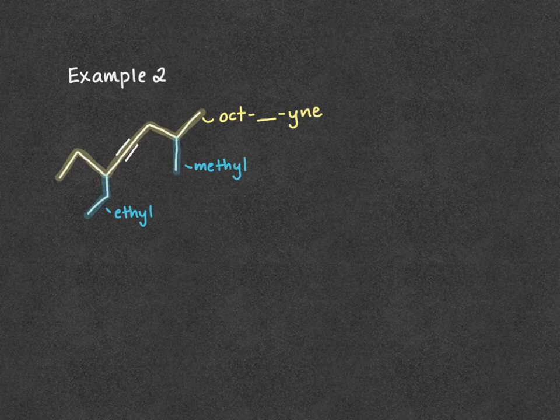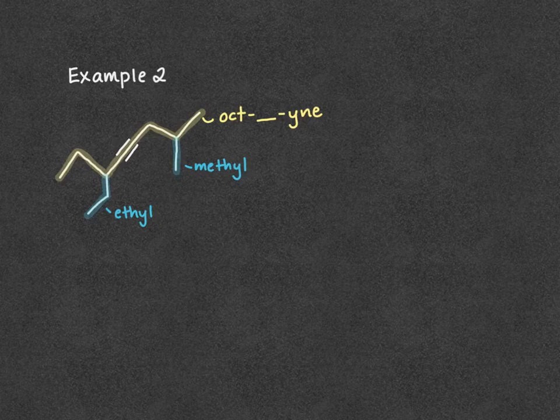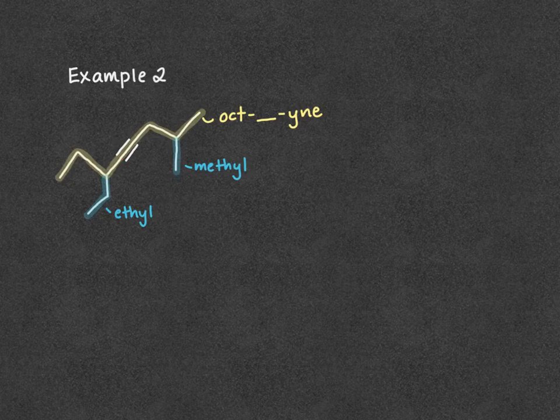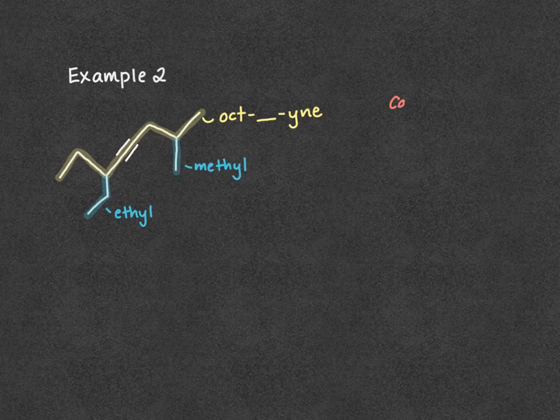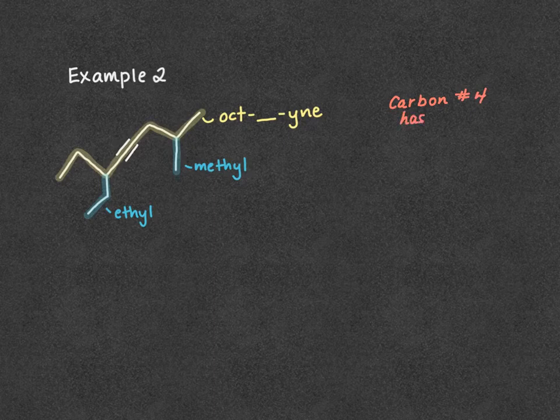Next, we're going to number our chain. If we start on the left side of our molecule, again giving preference to that triple bond, we're going to hit our triple bond at carbon 1, 2, 3, 4. If we start at the right side of our molecule, we hit the triple bond on carbon 1, 2, 3, 4. So in terms of numbering, carbon number 4 has the triple bond in either direction.